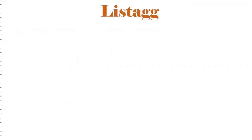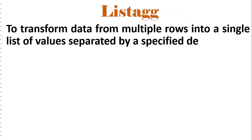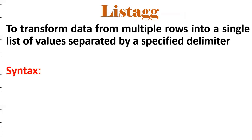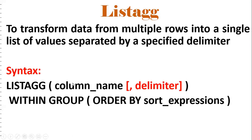First, let's understand what LISTAGG is. LISTAGG is nothing but a function that converts multiple rows into a single value based on a delimiter. If you see the syntax: LISTAGG(column_name, delimiter) WITHIN GROUP ORDER BY sort_expression. If you want comma-separated, hyphen-separated, or space-separated output, we can use this accordingly.